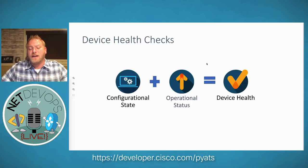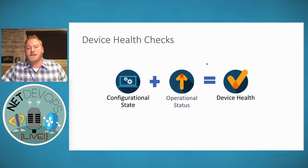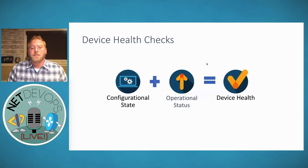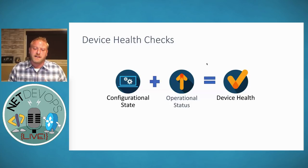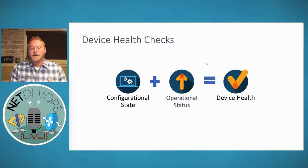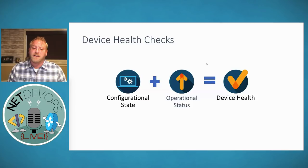In the testing and validation and really the broader Net DevOps space, we focus a lot on the configuration management pieces — how we push configuration down to devices. But a larger majority of the use cases I run into with customers have to do with this notion of a device check, which is a combination of what is the configurational state plus the operational status of that configuration. Customers have a large desire to create this device health check notion.